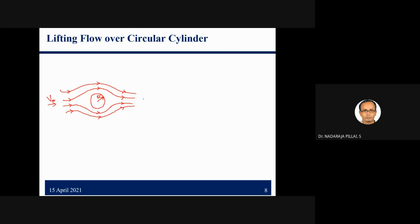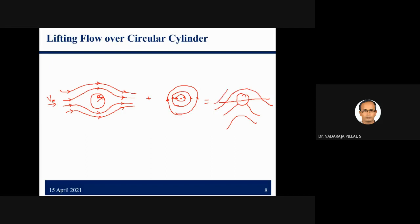Now I am going to add one vortex flow to the non-lifting flow over a circular cylinder. Adding the vortex flow will give us the lifting flow over the circular cylinder — the rotating case. The non-lifting flow combined with an elementary vortex flow creates a lifting flow.